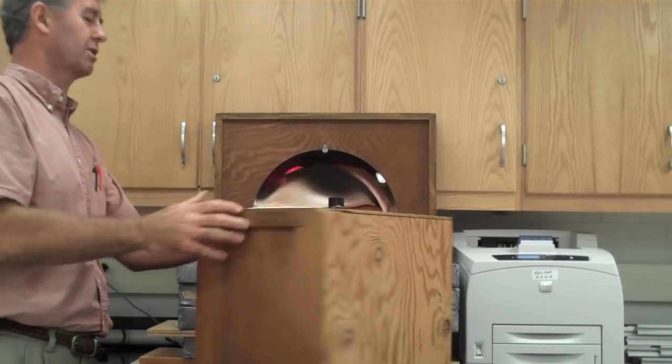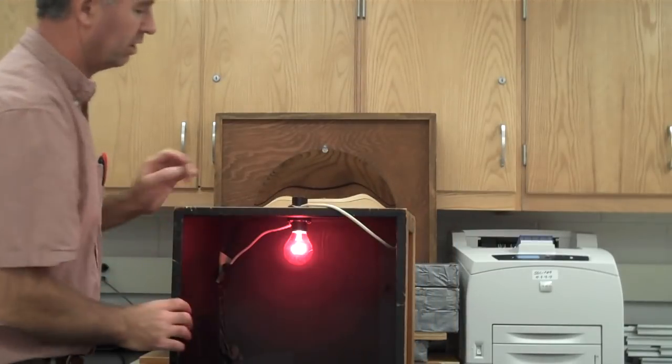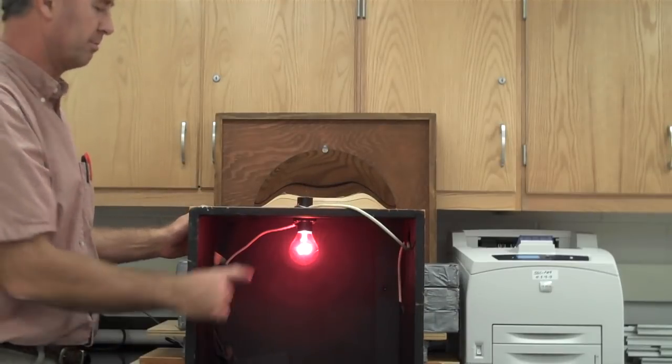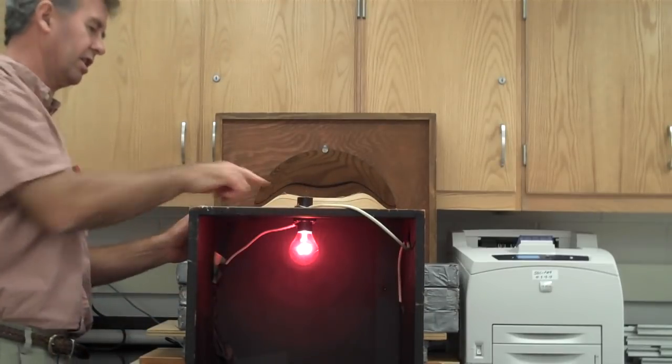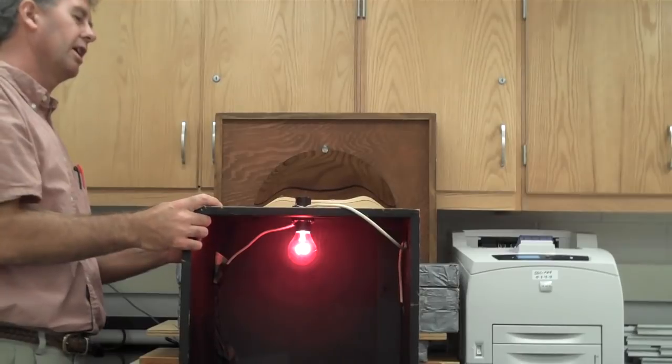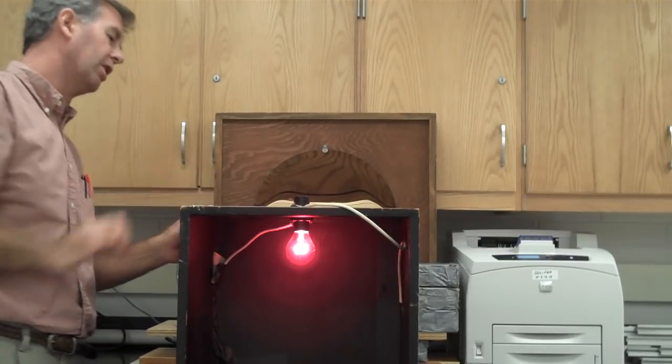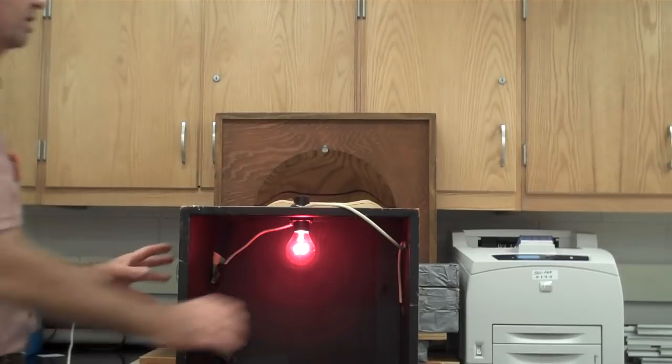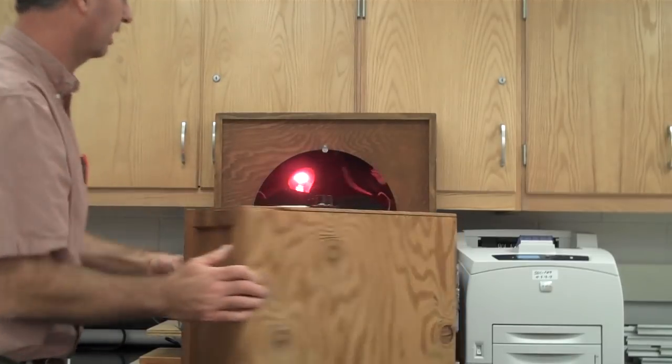So if we take this box and turn it around, what you notice is that we have in that box a light bulb. That light bulb is right underneath the light socket that is empty, and the image is projected by the mirror into that light socket, causing the appearance of that real image.